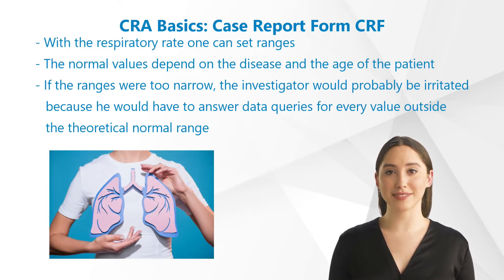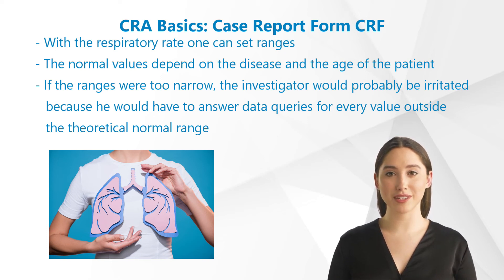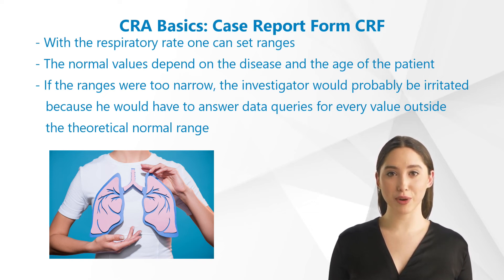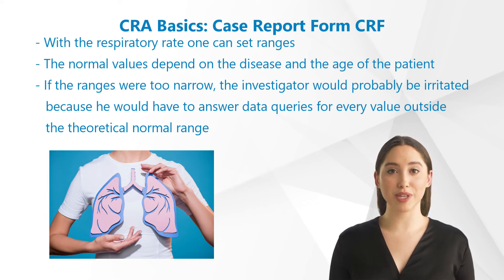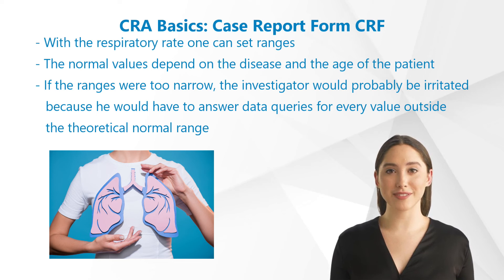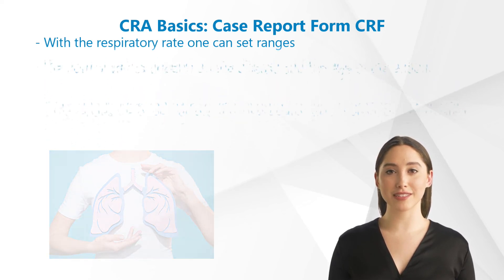With the respiratory rate, as a second example, one can set ranges. However, the normal values depend on the disease and the age of the patient, so they should be set quite broadly, which can of course lead to errors within the normal range. If, on the other hand, the ranges were too narrow, the investigator would probably be irritated because he would have to answer data queries for every value outside the theoretical normal range.